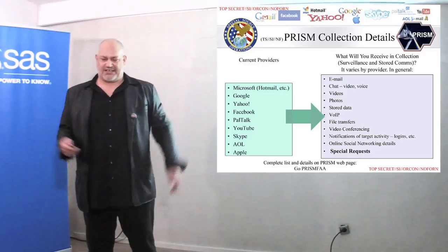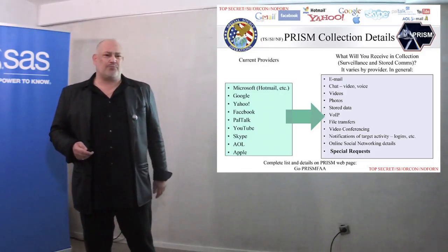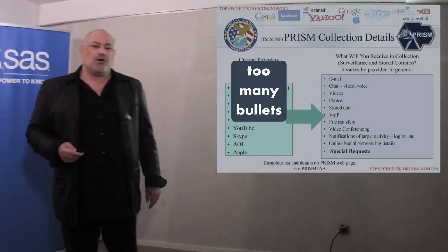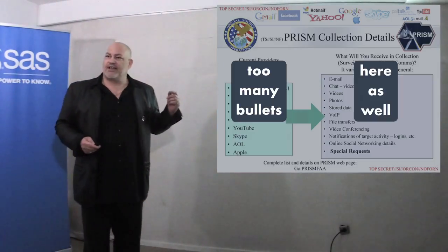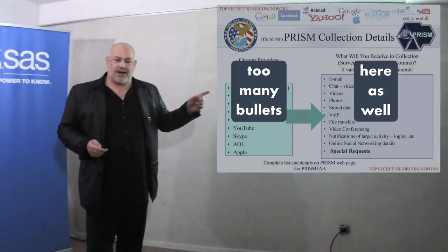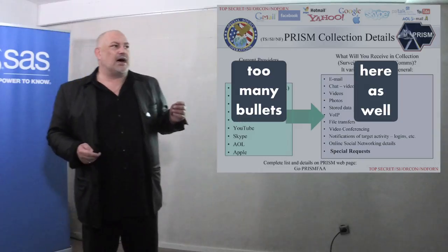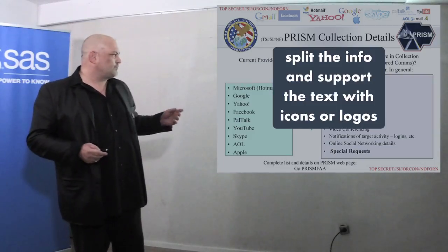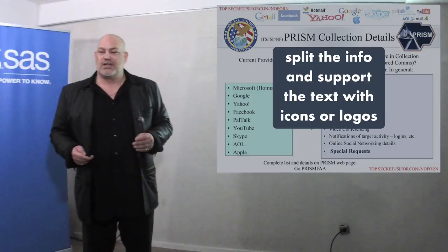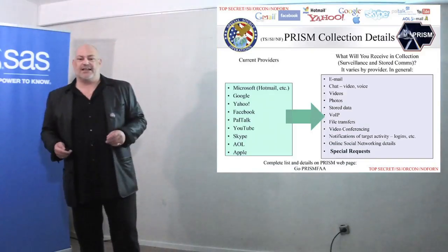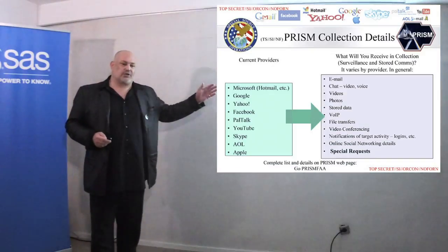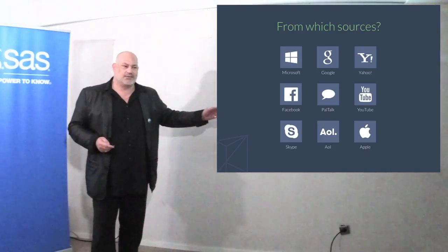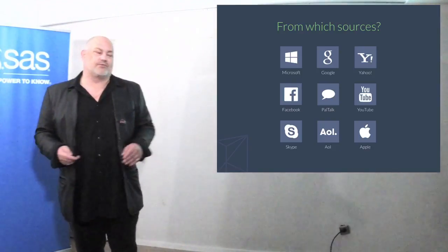Another slide — two text slides with lots of bullet points. Too many bullets on the left side as well as on the right. I would say, let's split the info, support the text with icons or logos, and do this slide on two slides. So this could look like: first this, second that. Wonderful, nice. Everybody would love the NSA.